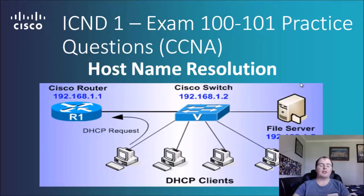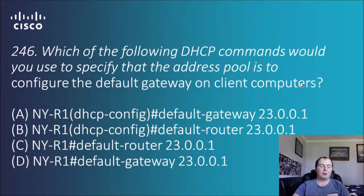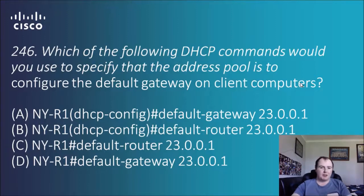Hi guys and welcome to another Cisco video. Today I'm going to talk about DHCP and hostname resolution. We'll start off with question 246: which of the following DHCP commands would you use to specify that the address pool is to configure the default gateway on client computers?